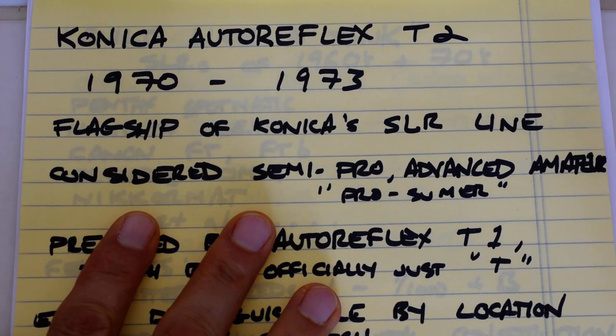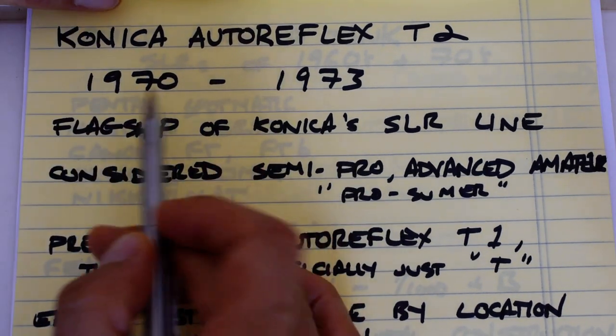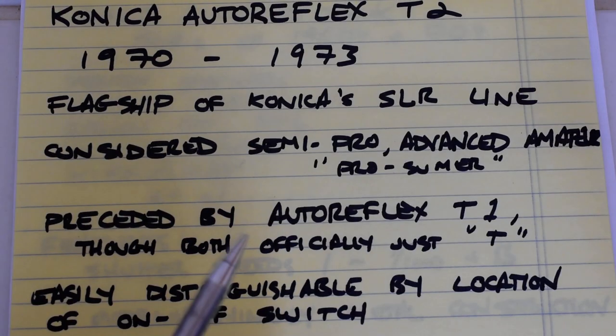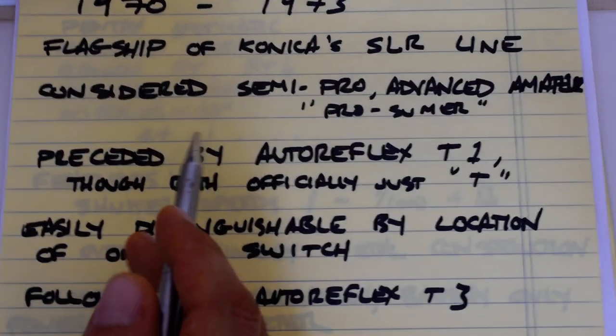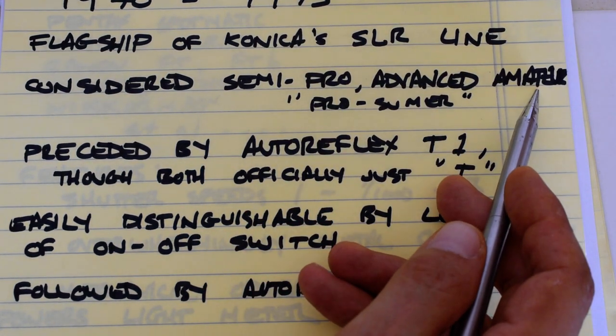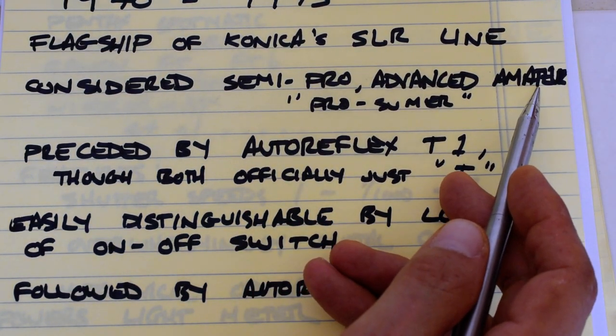The Konica Autoreflex T2 was produced from 1970 to 1973. It was the flagship of Konica's SLR line during this period.